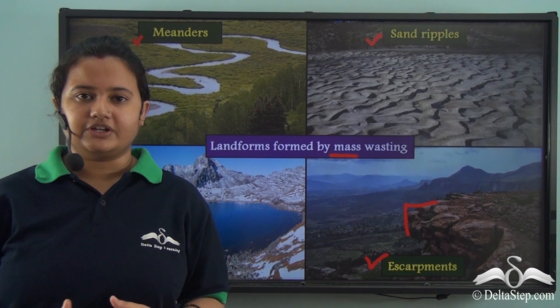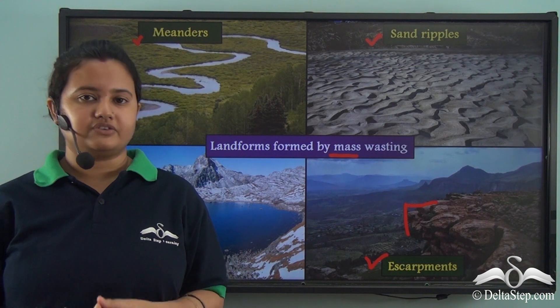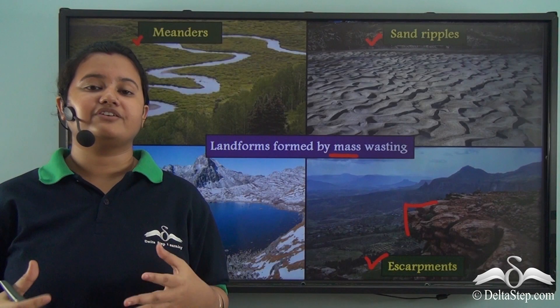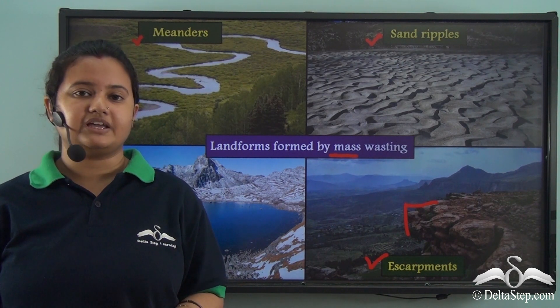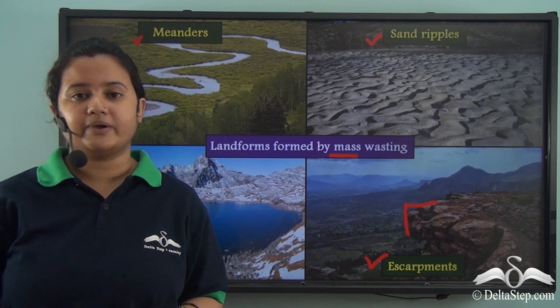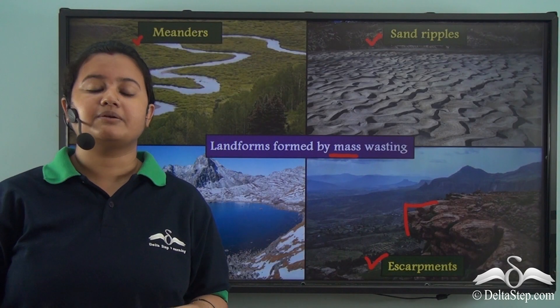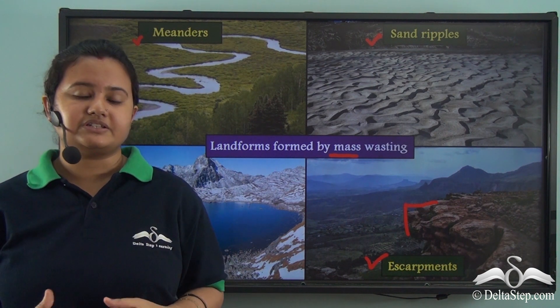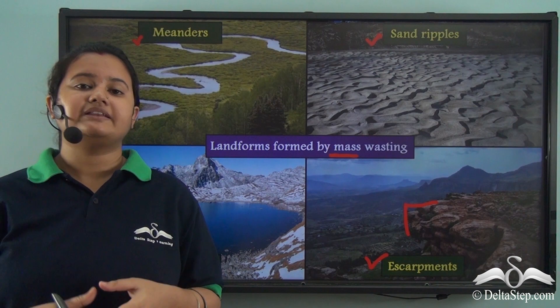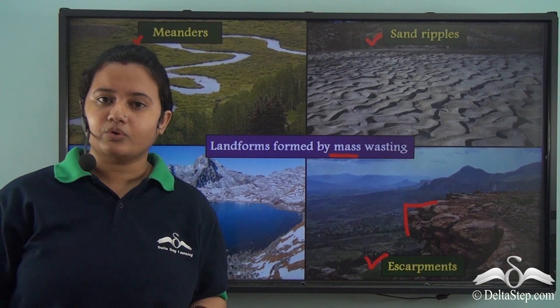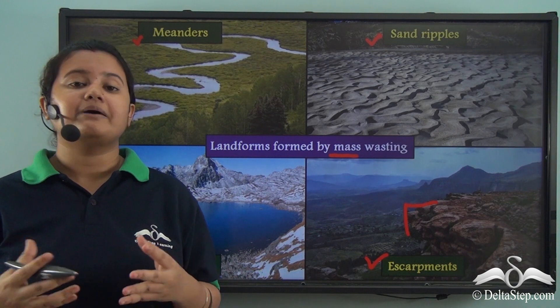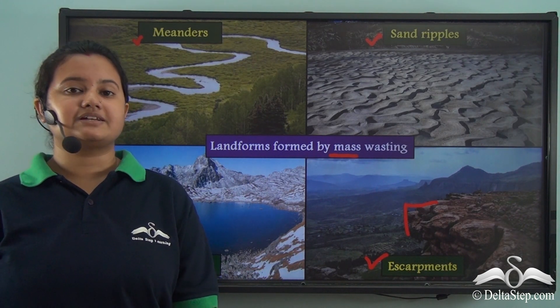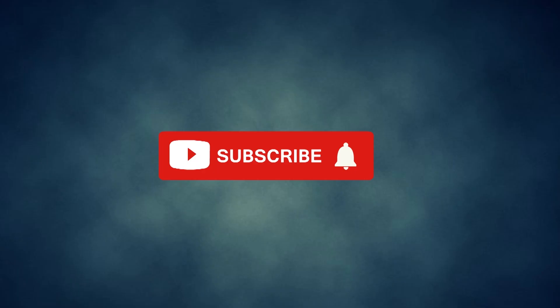In today's video we first understood the meaning of mass wasting: the large scale movement of rock debris under the influence of gravity. We then discussed the factors that influence mass wasting, the different types of mass wasting classified into slow and rapid, and finally the different landforms formed by mass wasting. In our next video we will discuss about denudation.